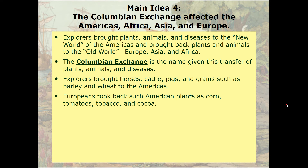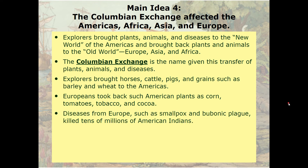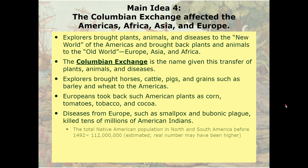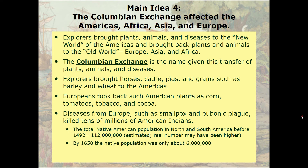Europeans took back such American plants as corn, tomatoes, tobacco, cocoa, and the potato. Diseases from Europe such as smallpox and bubonic plague killed tens of millions of American Indians. The total Native American population in North and South America before 1492 is estimated by some to have been around 112 million — the real number may have been higher. By 1650, the Native population of all of North and South America is believed to have numbered only about 6 million. That means 95% of the population of the Americas died off. For Native Americans, first contact with European explorers was their apocalypse — it was the end of their world in every real way imaginable.